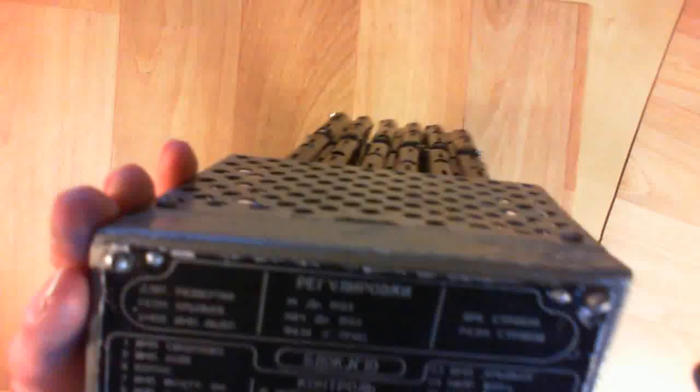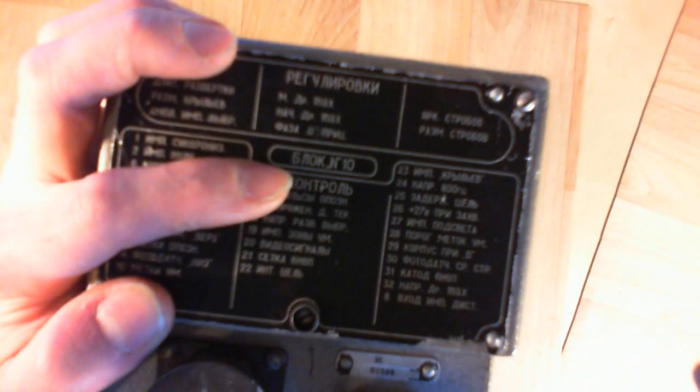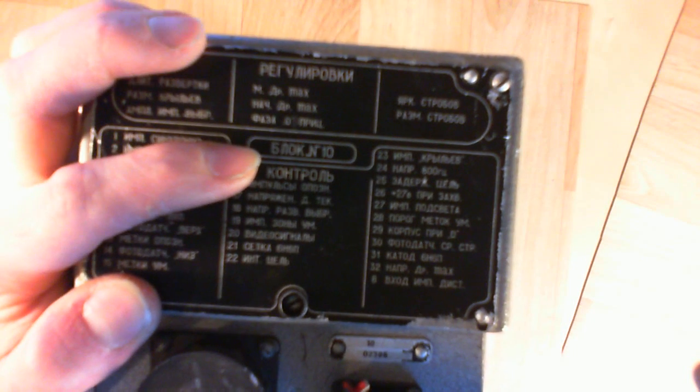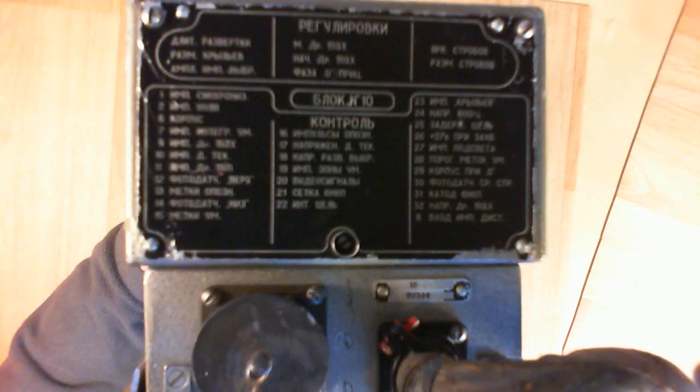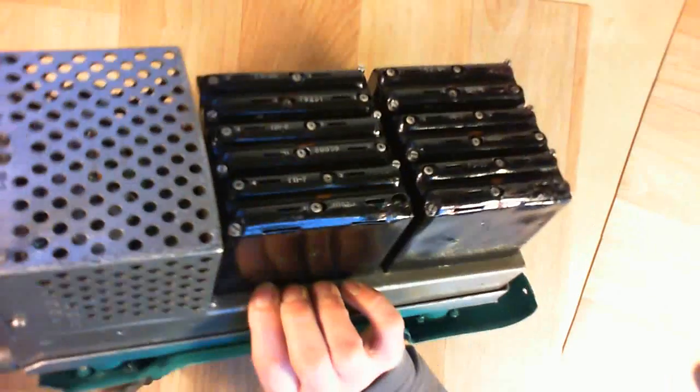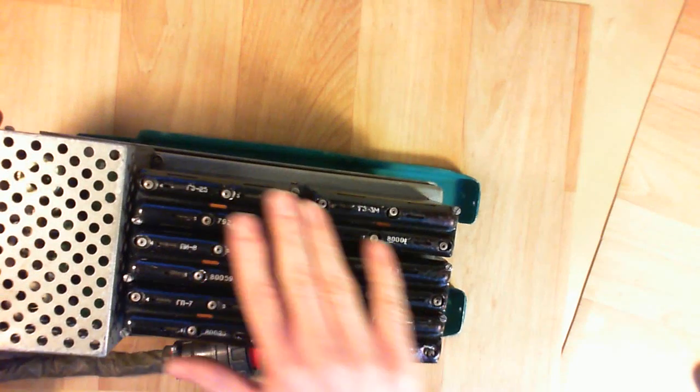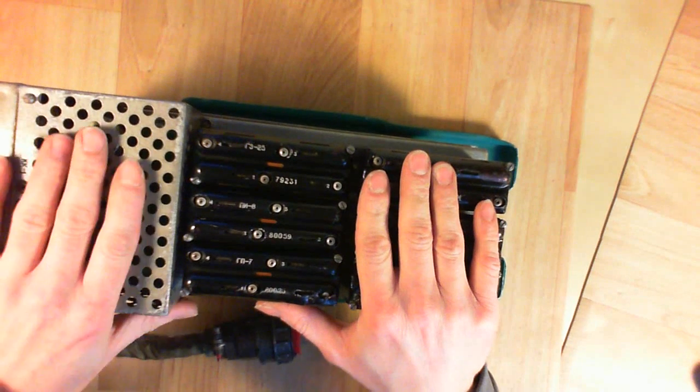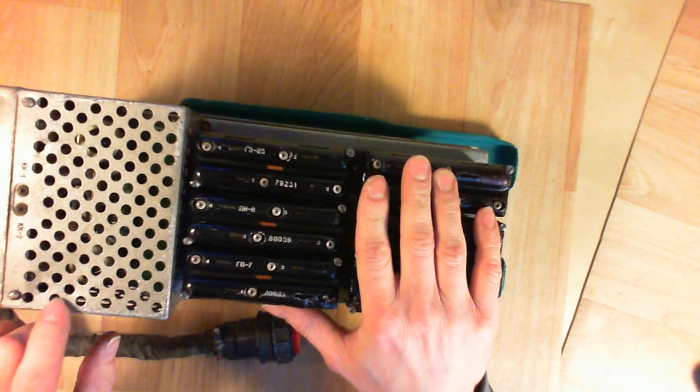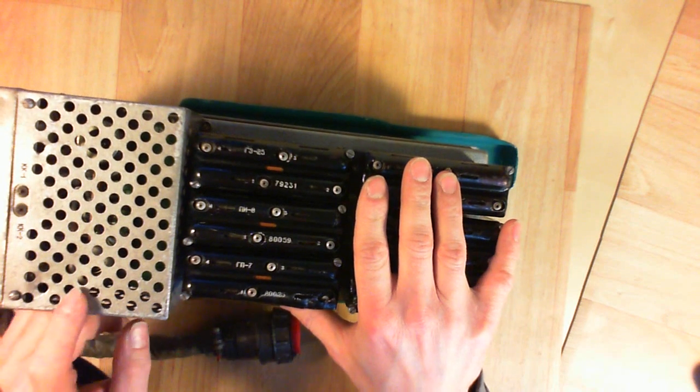The front plate says it is block number 10, with some info in acrylic. On the top you have several of these black things and a cover with holes, we can guess there is vacuum tubes inside.